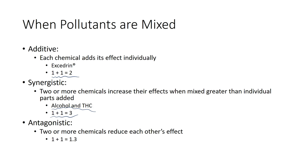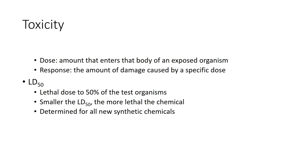Some chemicals are actually antagonistic, where one might reduce the effects of the other — you could picture that as one plus one equaling not two but one point three, because they work against each other instead of in synergy. These are three potential relationships when we have a mix of toxins: additive, synergistic, and antagonistic.